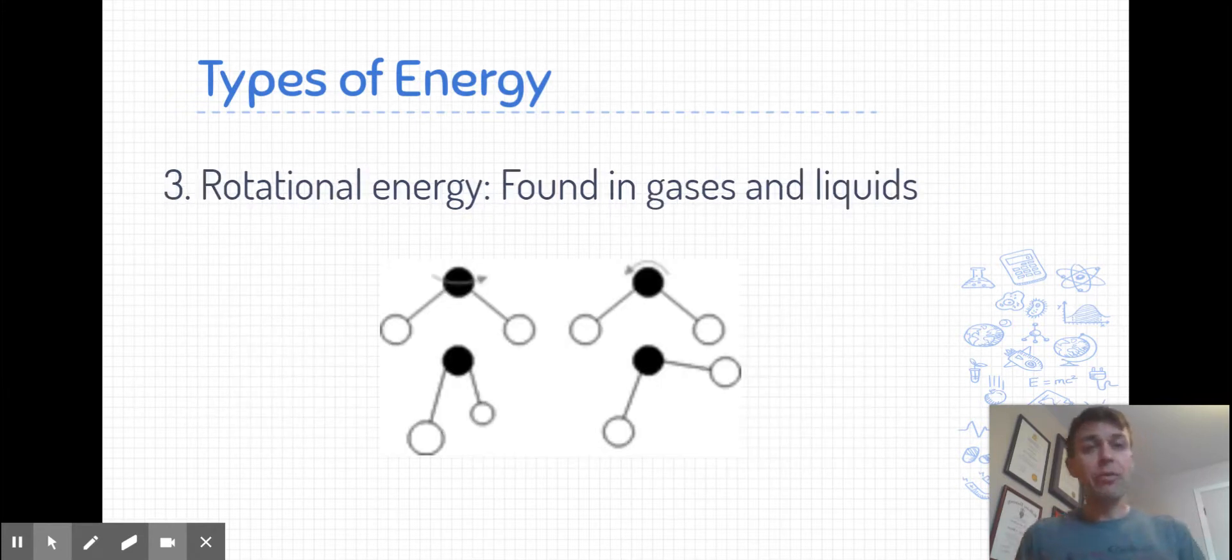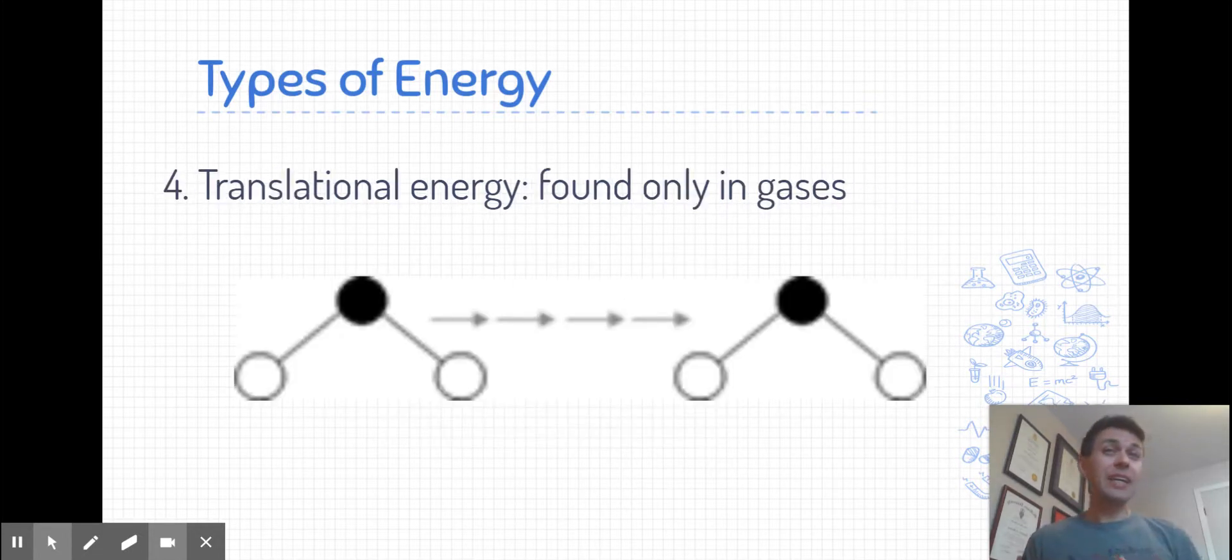If the intermolecular forces between molecules are weakened enough, that chemical substance can also undergo rotational kinetic energy. And that rotational energy is when those particles are rotating about an axis around each other, and that's found in both gases and liquids. And our final type of kinetic energy is translational energy. The movement of a particle from one point to another, which can only happen in gases, because they have overcome those forces of attraction between the molecules, and allows them to move in straight lines from one point to another.